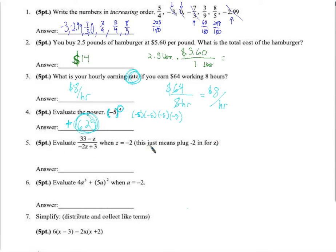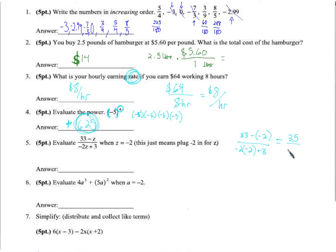Evaluate this expression when z equals negative 2 — just plug negative 2 in for z. We get (33 minus negative 2) over (negative 2 times negative 2 plus 3). Minus a negative is plus, so 33 plus 2 is 35. Negative times negative is positive, giving 4 plus 3 = 7. So we get 35 over 7, which equals 5.